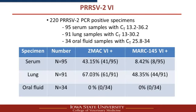Here is some data on PRRS-2 VI. We tested 220 PRRS-2 PCR-positive samples for VI comparison in two cell lines, including 95 serum samples, 91 lung samples, and 34 oral fluid samples with different CT ranges. The oral fluid samples tended to have fairly high CT values — it's difficult to obtain oral fluid samples with very low CT values.